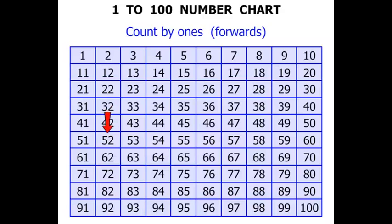What about if we started at, for example, 52? So 52, 53, 54, 55, 56, 57, 58, 59, 60, 61, 62. And again we could continue on with that.